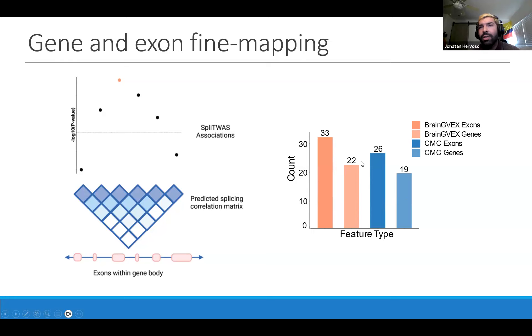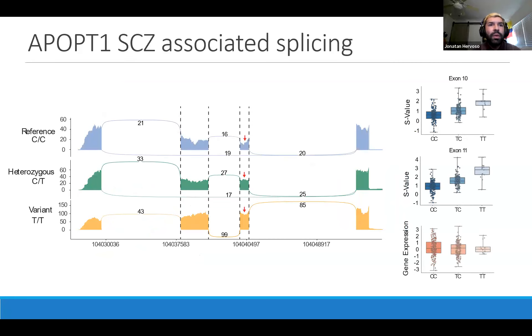From here, we had a good set of genes and exons that we could take a better look at and see how the genetic regulation was actually happening and how big this splicing signal was. We took a look at a couple examples. I'll be showing one particular example from a gene called APOPT1, which is particularly related to an apoptosis regulatory pathway. For this particular gene, we had two exons, which are the ones highlighted through the dotted lines, that were associated.